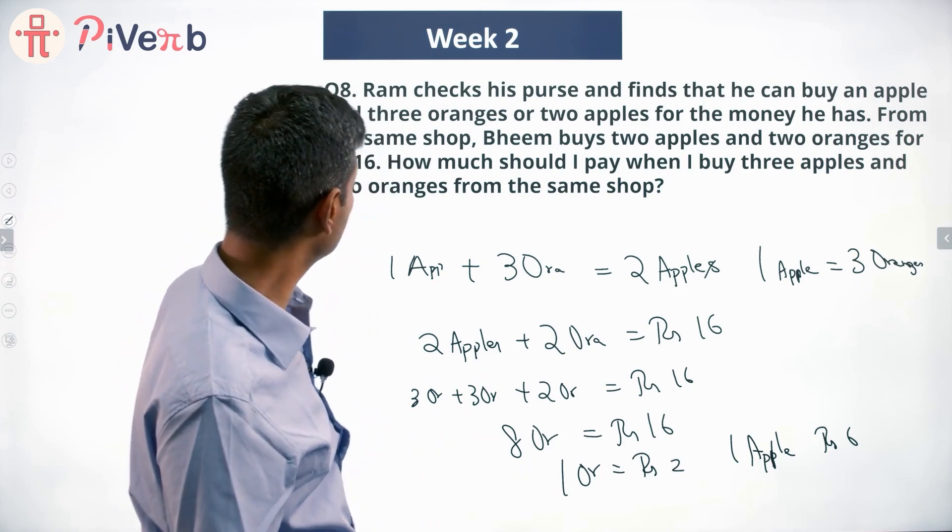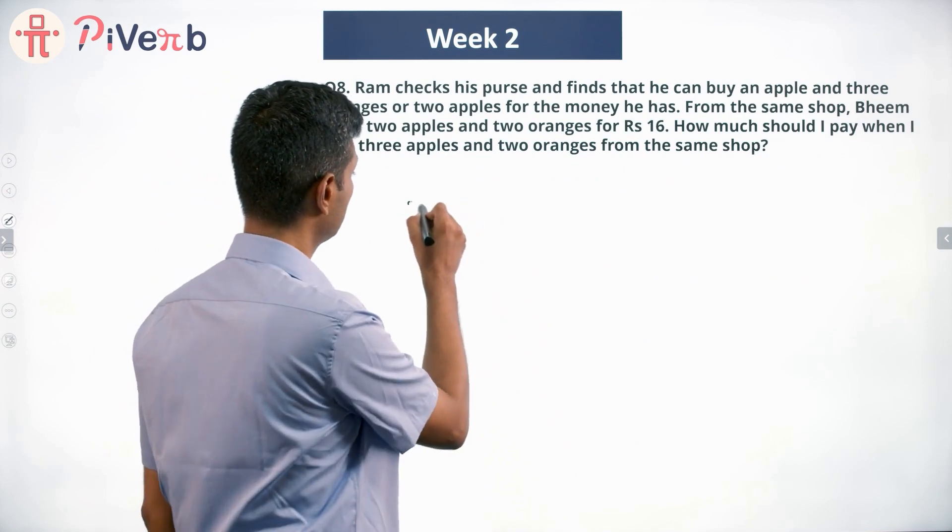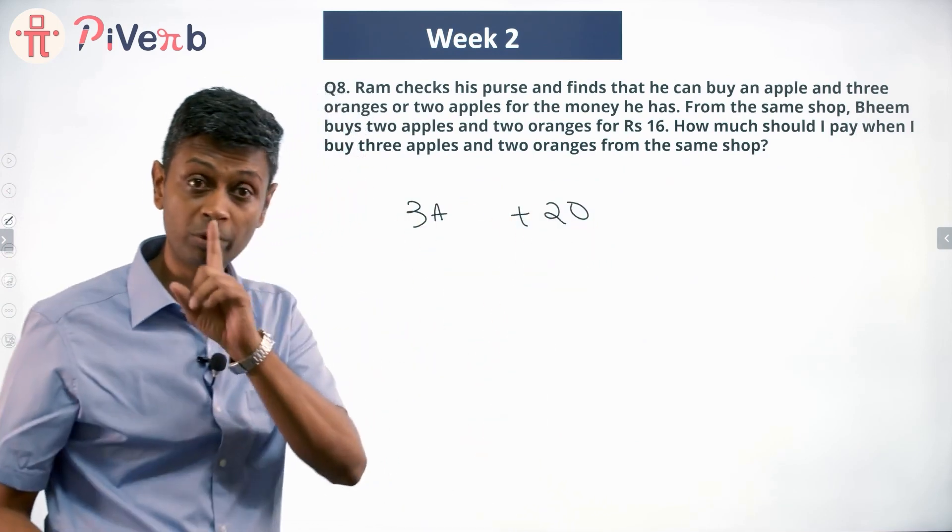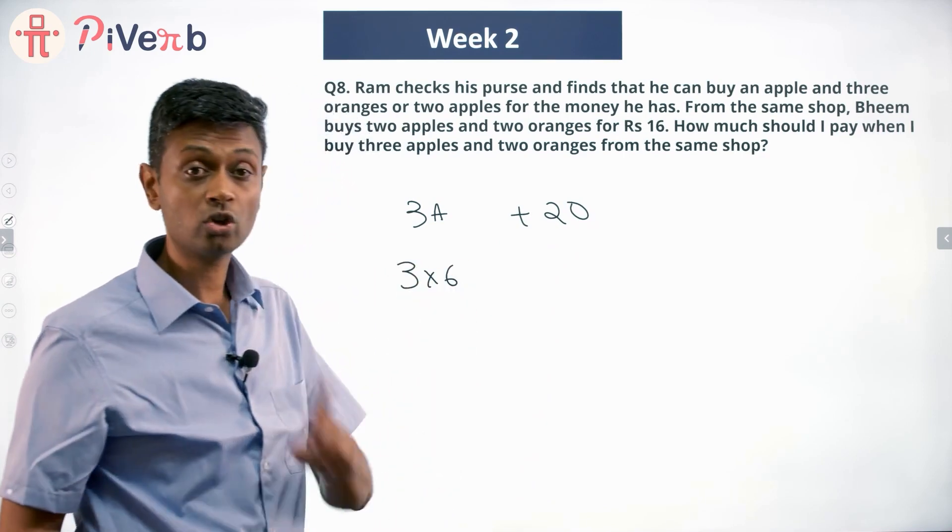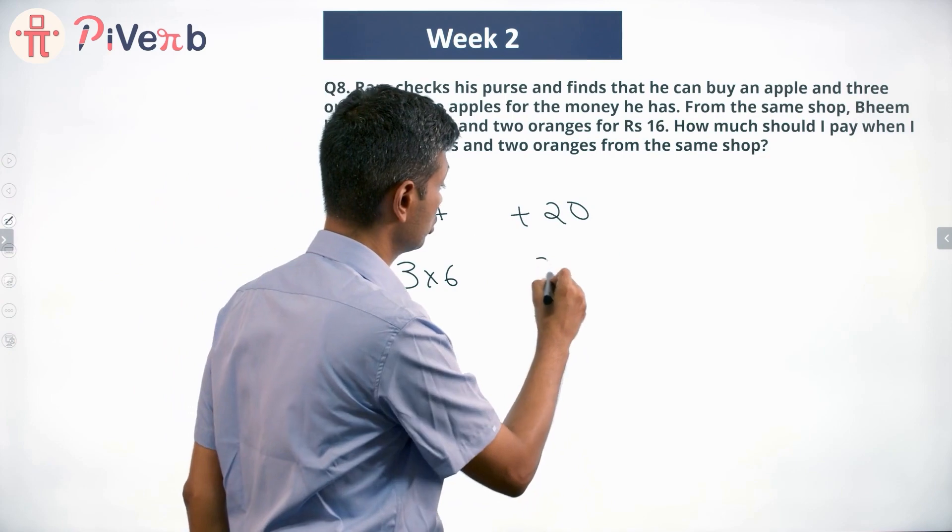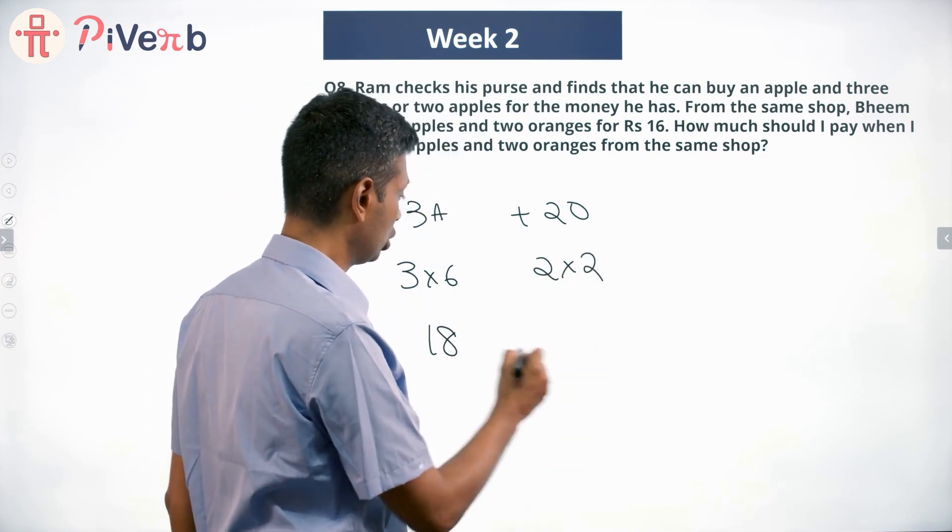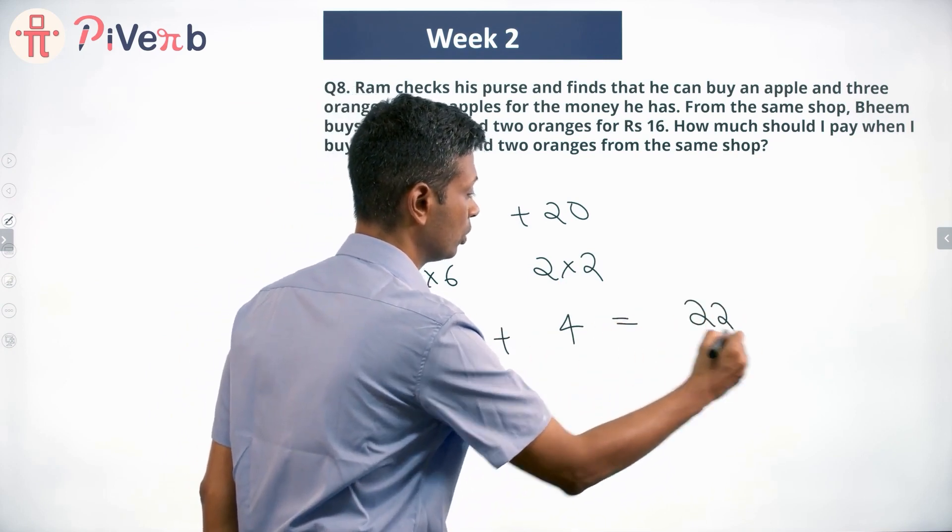Now let's go further. How much should I pay when I buy three apples and two oranges from the same shop? Oh lovely - three apples plus two oranges. One apple costs rupees 6, so this will cost 3 into 6. One orange costs rupees 2, this will cost 2 into 2. 3 into 6 is 18, 2 into 2 is 4, 18 plus 4 is 22.